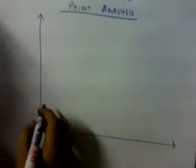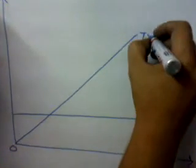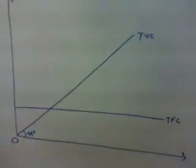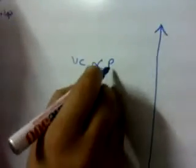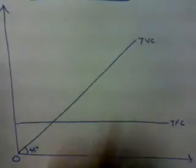In the break-even point graph, we have the fixed cost line — we call it the total fixed cost. Then we have the total variable cost. Total variable cost is generally a 45-degree line because with the production of every single unit, variable cost per unit is one. So variable cost for 10 units is 10, and for 15 units is 15. There is a perfect correlation between variable cost and units of production, hence the 45-degree incidence. This is the total variable cost.